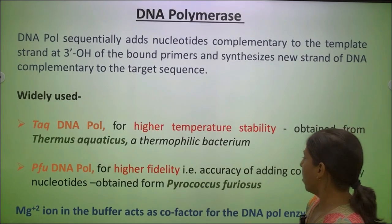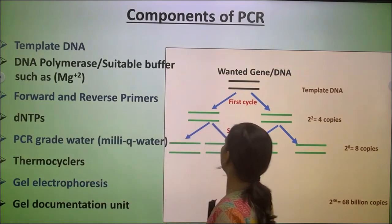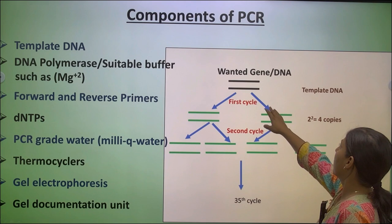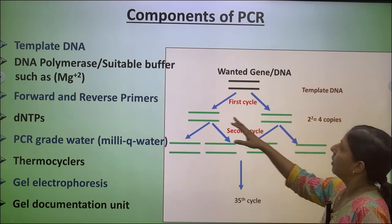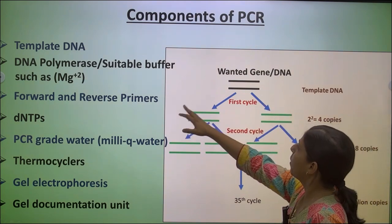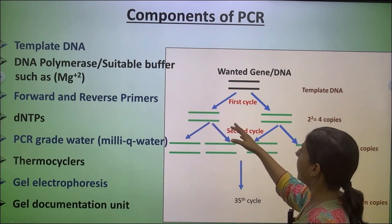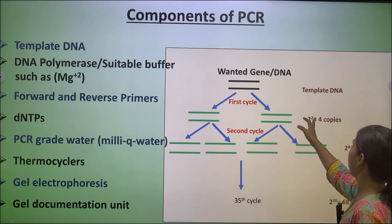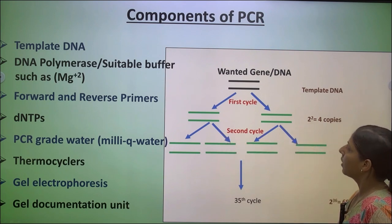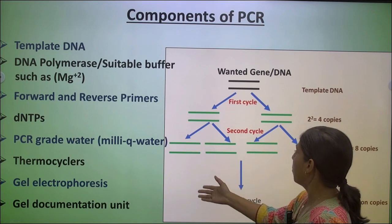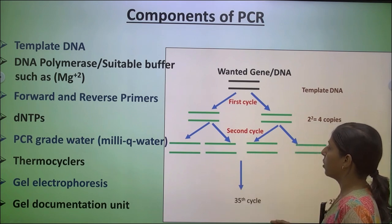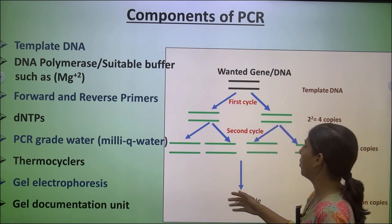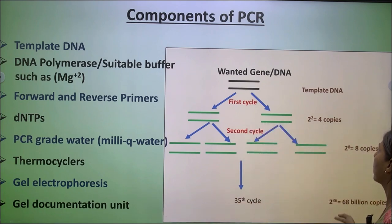The components of PCR are: template DNA, which is the wanted DNA that has to be amplified; DNA polymerase; a suitable buffer containing Mg²⁺ which acts as a cofactor for DNA polymerase; forward and reverse primers; dNTPs which act as a substrate; PCR-grade water; and a thermocycler machine. Gel electrophoresis is used to run the PCR product, and a gel documentation unit is used to view the amplified product.